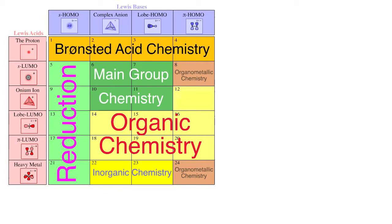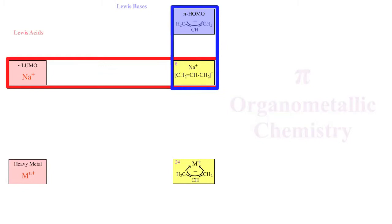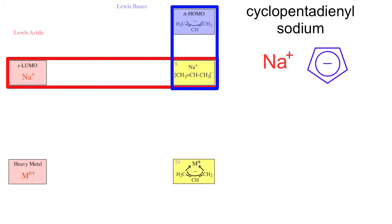Some organometallic chemistry now. There are two general types of organometallic chemistry. First, we have the pi HOMO systems with S-LUMO Lewis acid counter ions. A classic example would be cyclopentadienyl sodium, where the sodium acts as a non-electrophilic counter ion to the reactive cyclopentadienyl anion, and phenyl lithium.